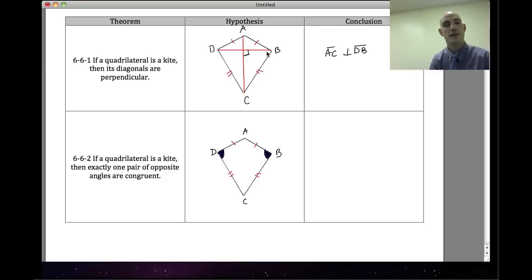That's going to be a property that we'll use. In theorem 6.2, if a quadrilateral is a kite—we know it's a kite because it has two sets of congruent consecutive sides—then it has exactly one pair of opposite angles that are congruent. So we could say that angle D is congruent to angle B.